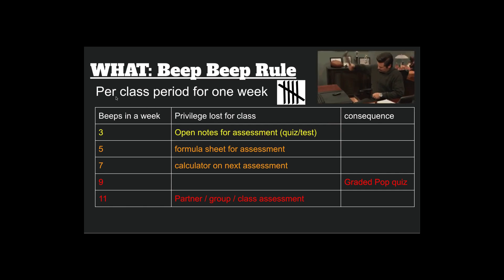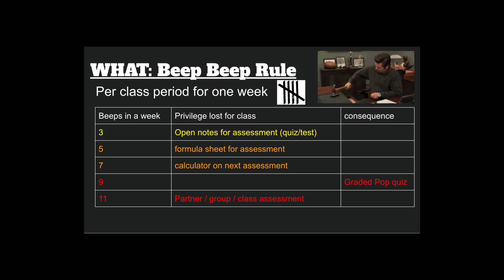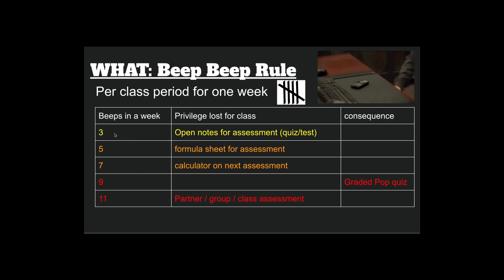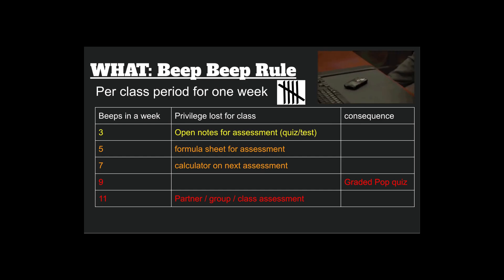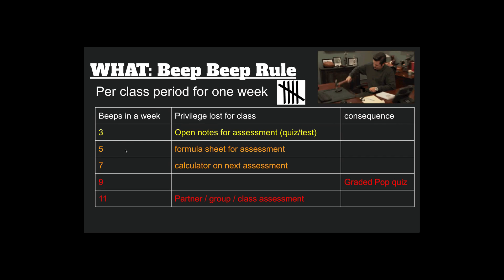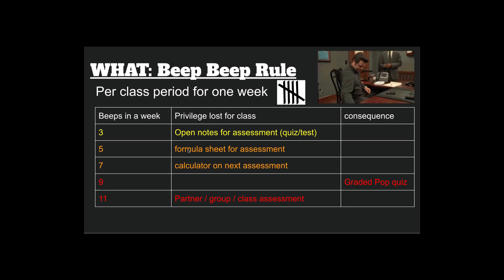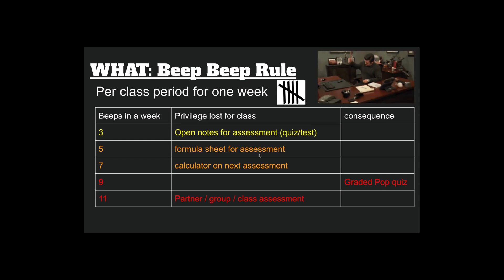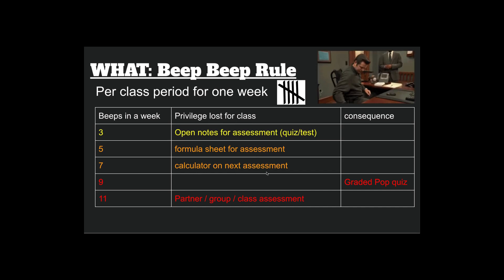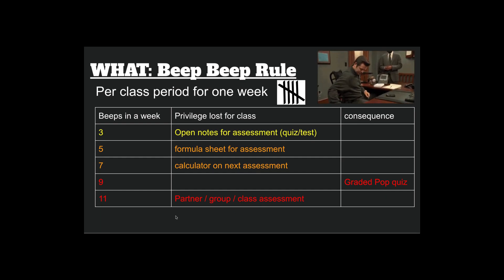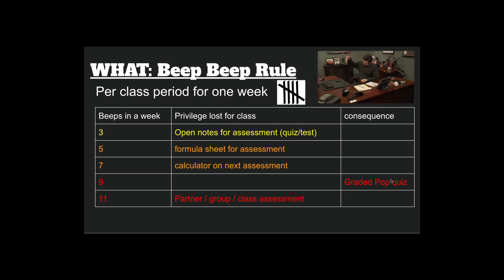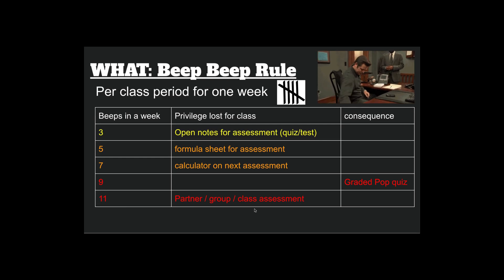Here's the beep beep rule — this is per class each period and I'll put a tally. We usually take quizzes and tests on Fridays. If you guys get three beeps in a week — meaning three people are using their phones — you lose the privilege of open notes for a quiz or test that whole week. Five beeps: you can't use your formula sheet. Seven beeps: you can't use a calculator on the next assessment. Nine beeps: you get a graded pop quiz — as soon as I see the ninth phone or earbud, I'll say 'pop quiz, pull out a piece of paper.' Eleven beeps: you lose the privilege of a partner, group, or class assessment.